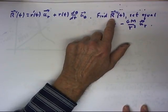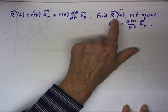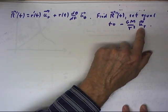And our strategy is going to be find an expression for r double prime, set that equal to negative GM over r squared multiplied by u sub r.